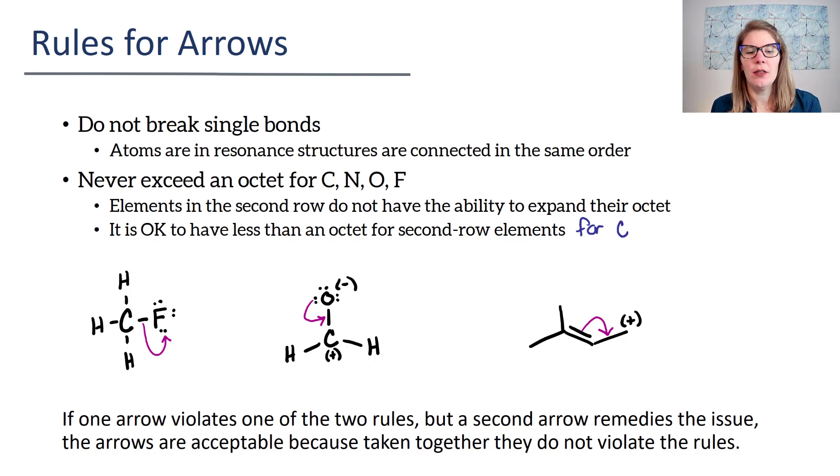Let's look at some of the arrows that I've drawn in and talk about if they violate one of these rules or not. In the first structure on the left with the CF in it, I'm drawing an arrow and that arrow says this pair of electrons moves onto this fluorine. It says take this pair of electrons and put it on fluorine. So what's happening? That's saying we're breaking a single bond. That's saying take those electrons away from carbon and put them solely on fluorine. And that's what breaking a single bond looks like. You can't do that. So this is not an okay arrow.